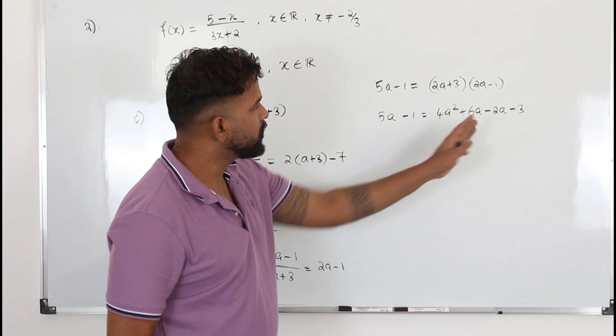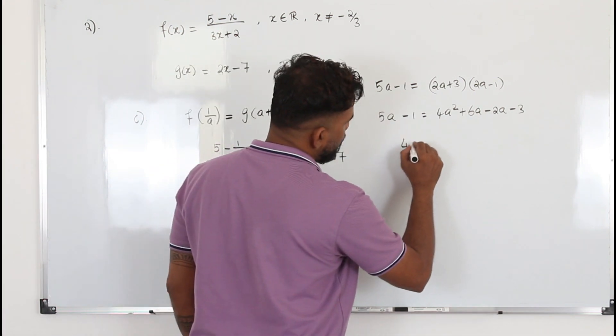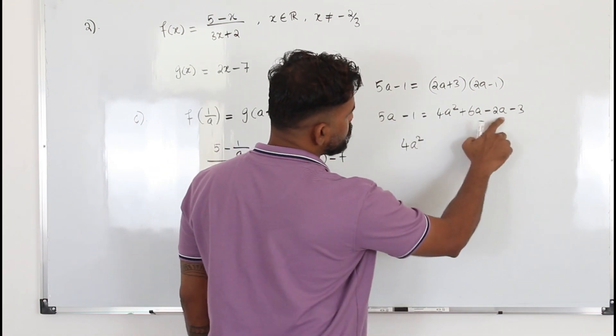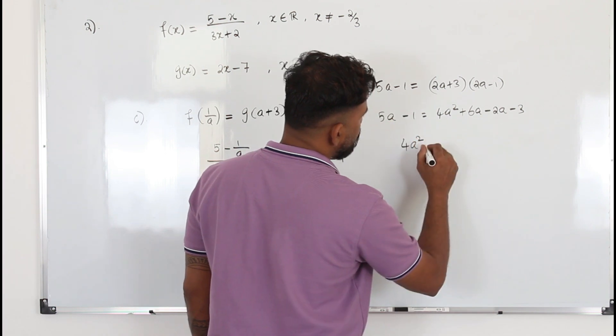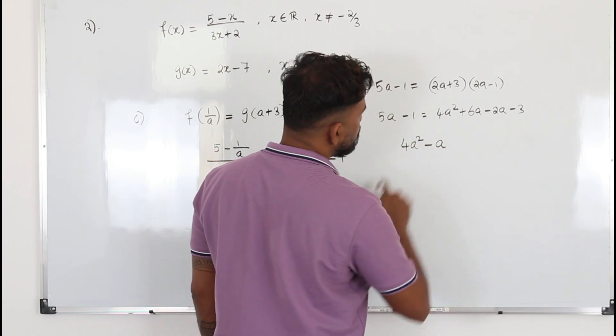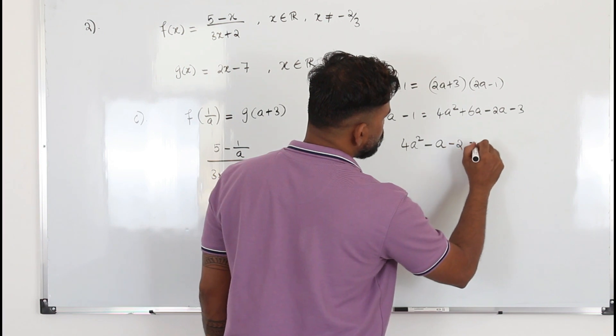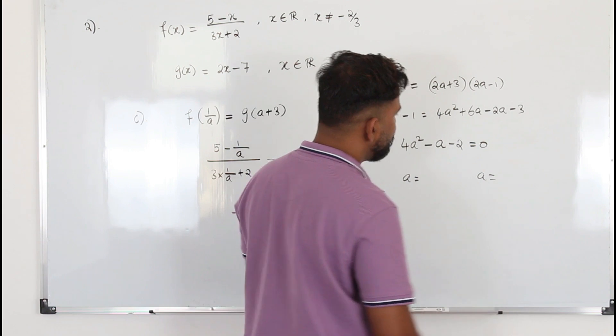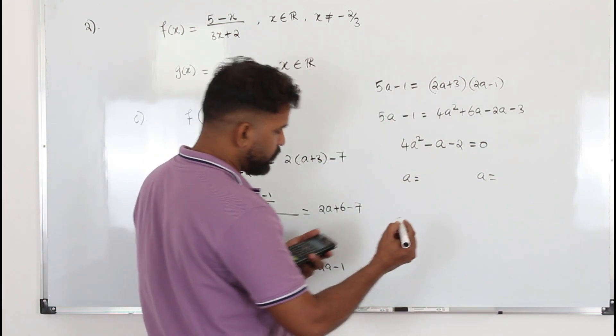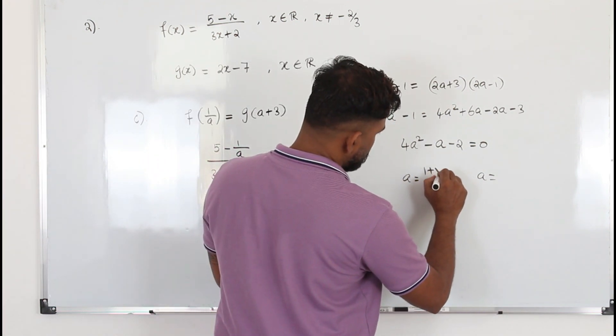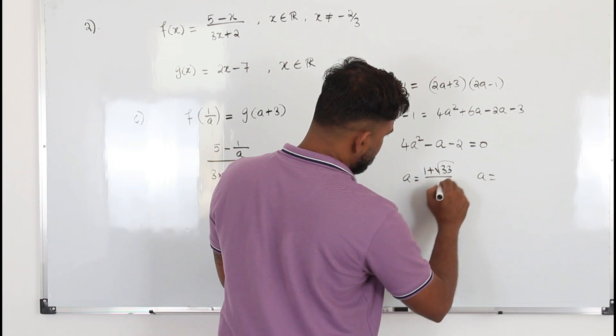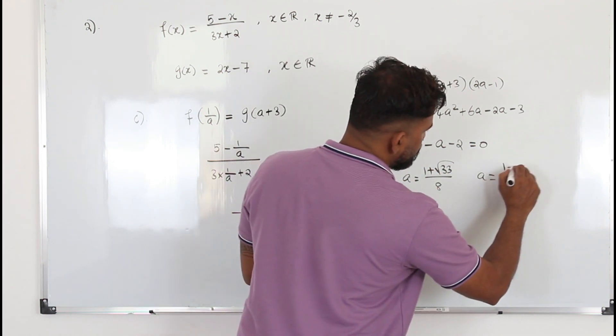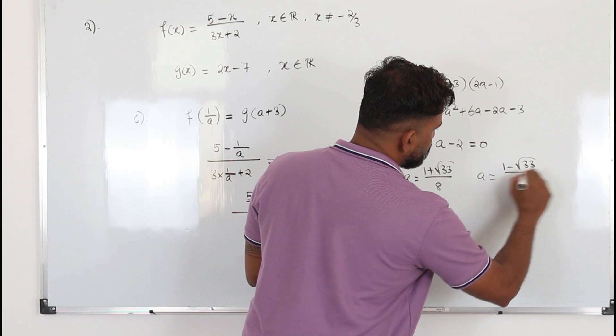Open the bracket. You will get 4a² + 6a - 2a - 3. Put everything in one side. You get 4a², 6 minus 2 is 4, minus 5 is -1, -3 + 1 is -2 equals 0. Solve this. You get two a values. The first value is (1 + √33) / 8. The second value is (1 - √33) / 8.